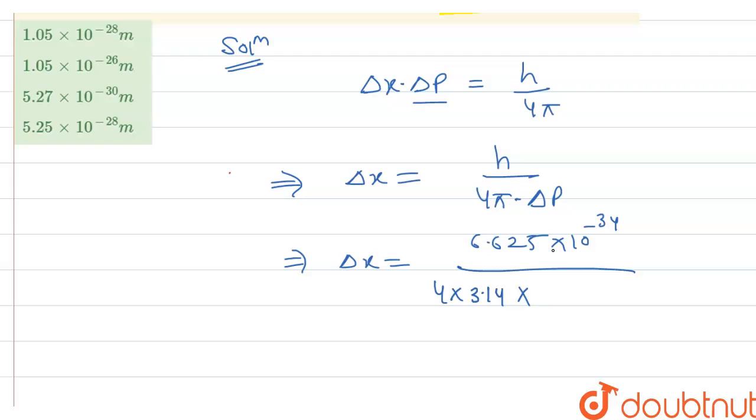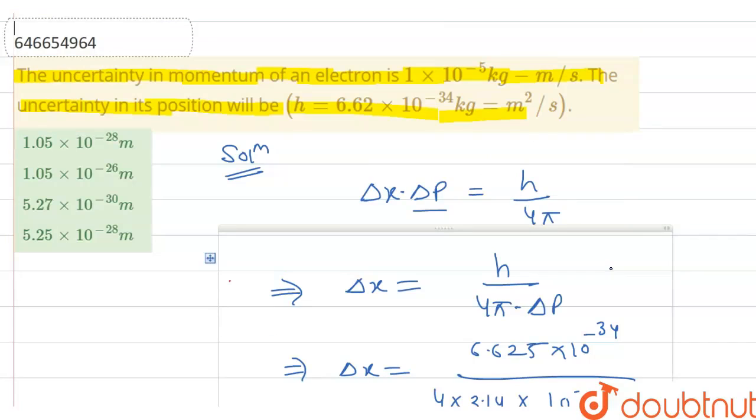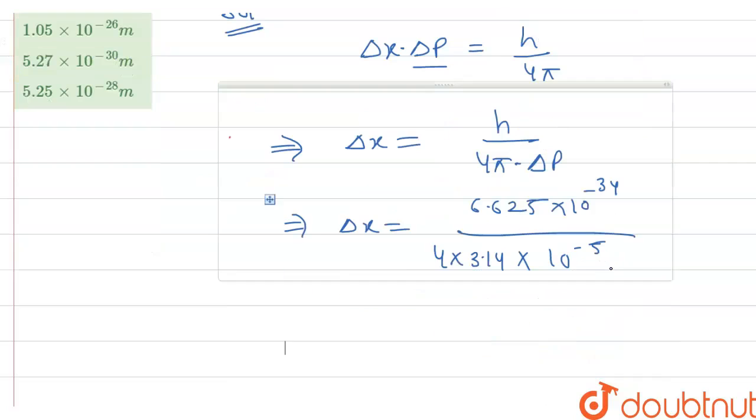Delta p is nothing but that is 10 raised to power minus 5, that is given in question, kilogram meter per second.